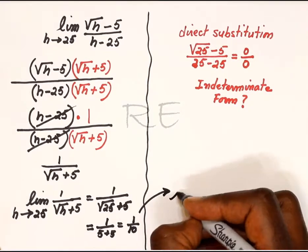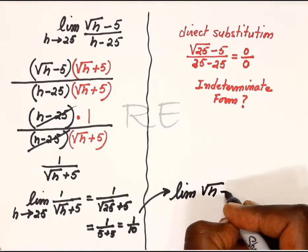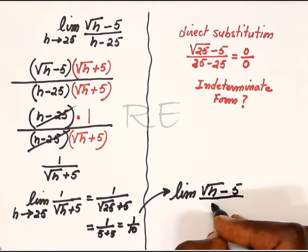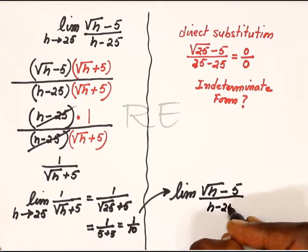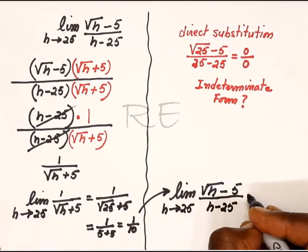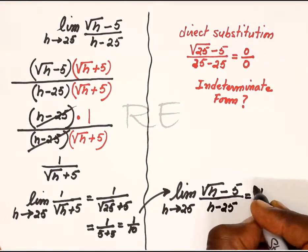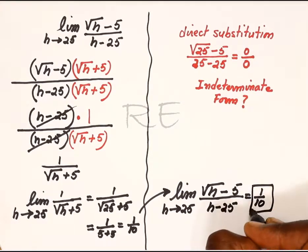We just have to write the original problem. The limit of square root of h minus 5 over h minus 25 as h approaches 25 is 1 over 10. The correct answer is C.